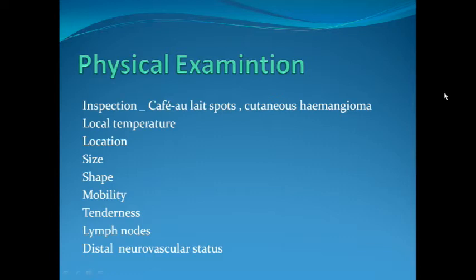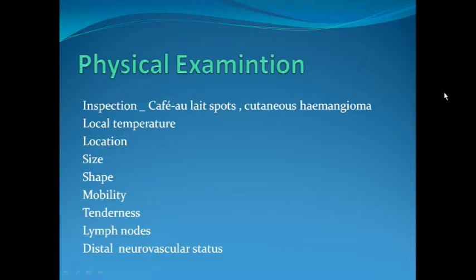Physical examination of a bone tumour covers the same headings as examination of any mass. On inspection, we should be on the lookout for café au lait spots — more than six in the body can suggest a diagnosis of neurofibromatosis. Finding multiple bone tumours with cutaneous haemangioma can suggest Maffucci syndrome. Local temperature should be assessed; a raised local temperature can suggest a more aggressive lesion due to higher vascularity or can suggest an infection. Location, size, and shape of the tumour are also important.